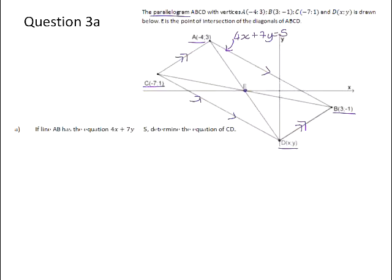So CD is going to be parallel to AB. And the reason for that is because they are the opposite sides of a parallelogram. So therefore, the gradient of CD will be equal to the gradient of AB.